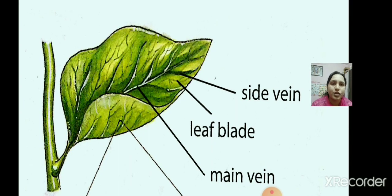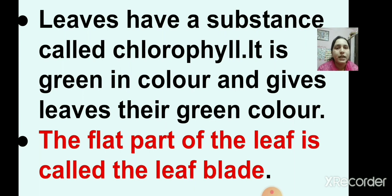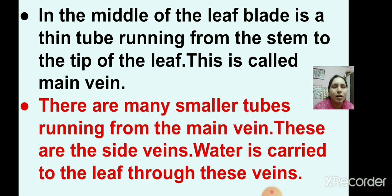This is the structure of a leaf — the side vein, leaf blade, and main vein are shown in this picture. Leaves have a substance called chlorophyll, which is green in color and gives leaves their green color. The flat part of the leaf is called the leaf blade. In the middle of the leaf blade is a thin tube running from the stem to the tip of the leaf, called the main vein.